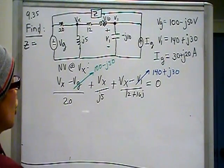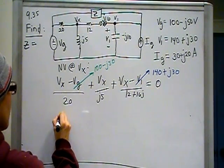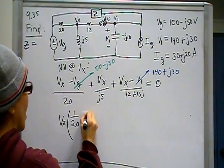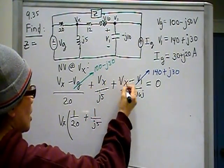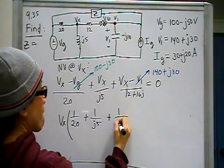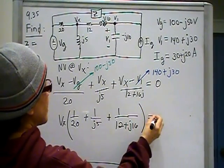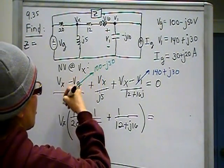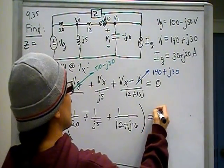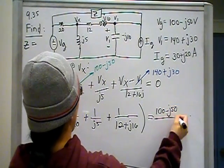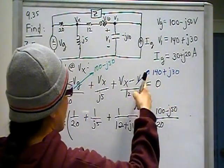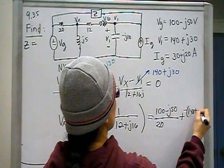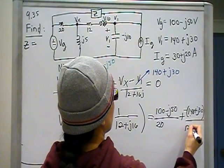So now let's group things together and rewrite this equation in terms of Vx. Here's my Vx. I have 1 over 20 as a coefficient here, 1 over j5 as my coefficient here, and then here I have 1 over 12 plus j16. That is equal to, this is just some number I'm going to put on the other side. So here, this is minus, right? When I bring it to the other side, the minus gets undone because I'm just going to add it. So this becomes 100 minus j50 over 20. And this here, this is going on the other side so it's going to be the negative of that. So minus 140 plus j30 over 12 plus j16.